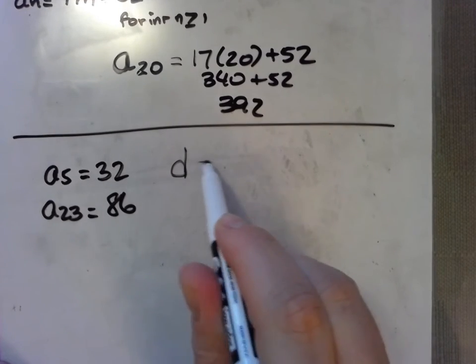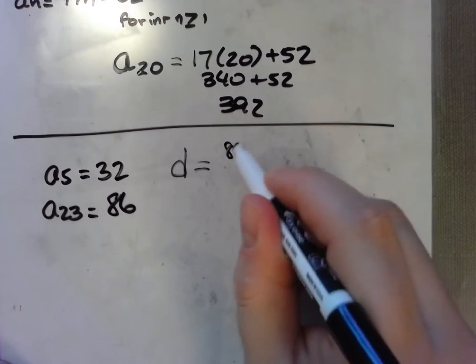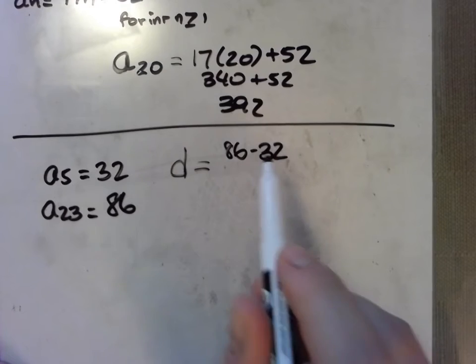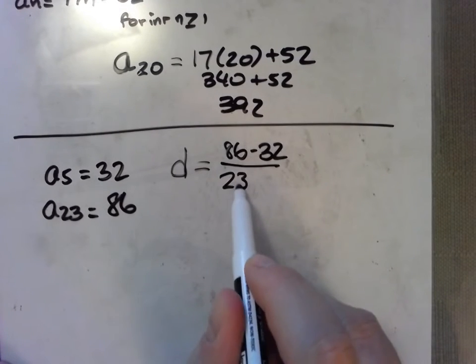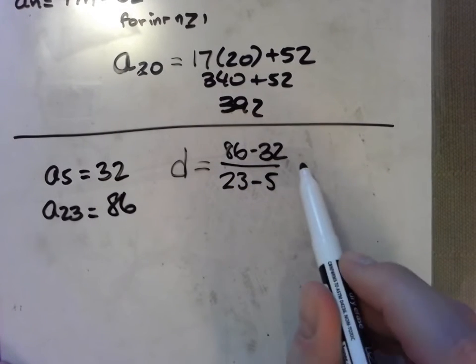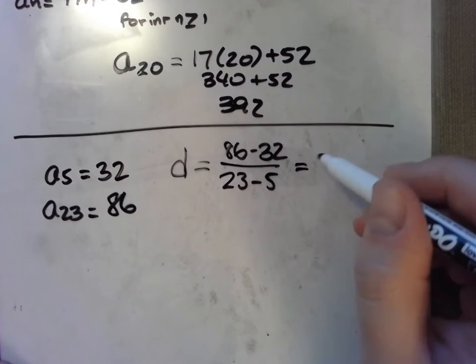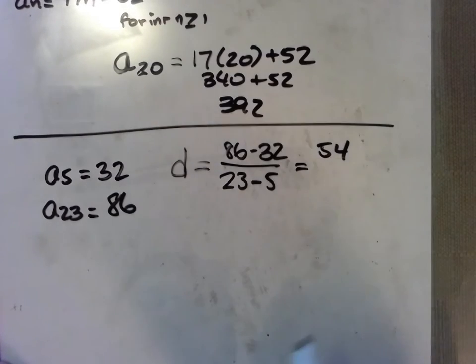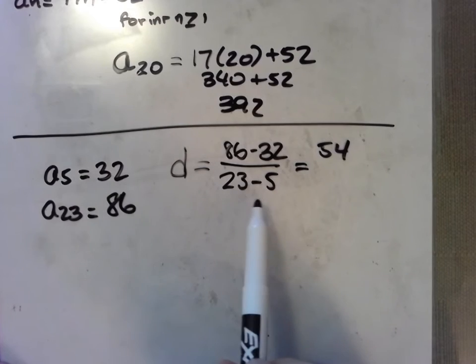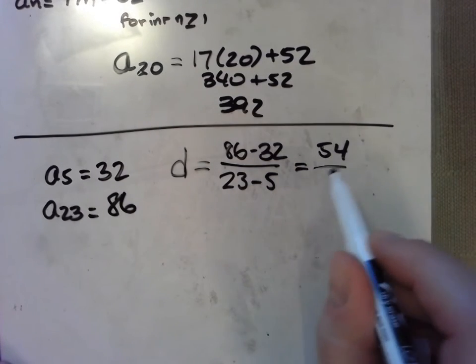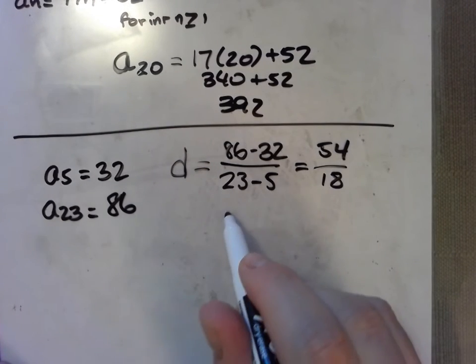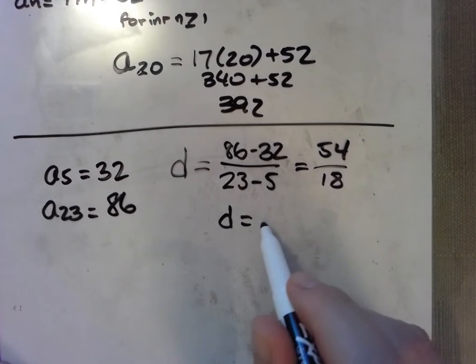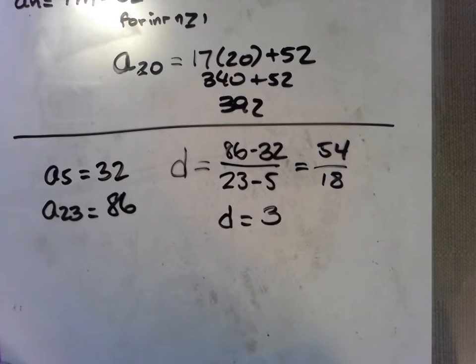Your difference can be found by calculating 86 take away 32, dividing it by 23 minus 5. So we have the change in the values of the outputs, that's 54, and dividing it by the change of the inputs, that's 18. It looks like we have a whole number because 18 goes into 54 three times. It looks like our difference is 3.